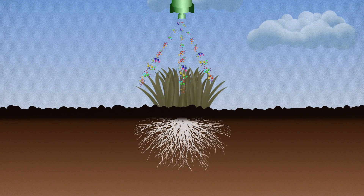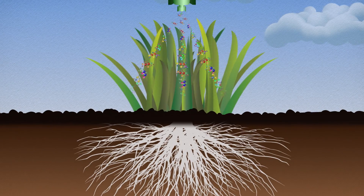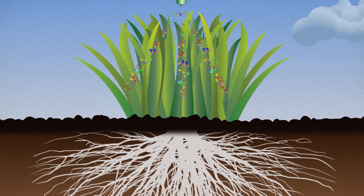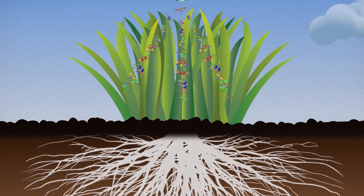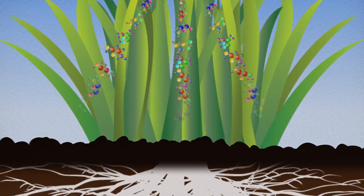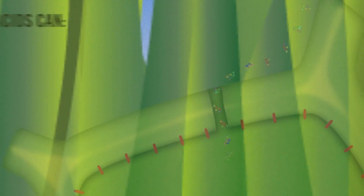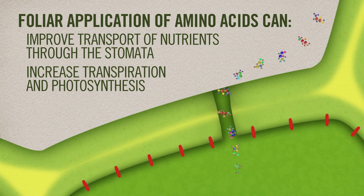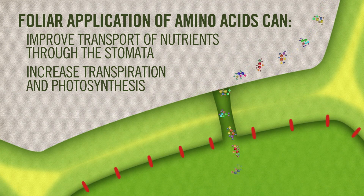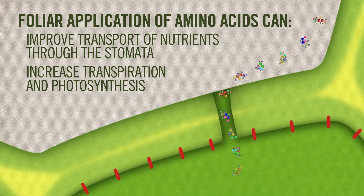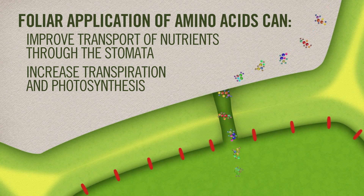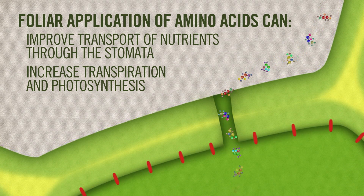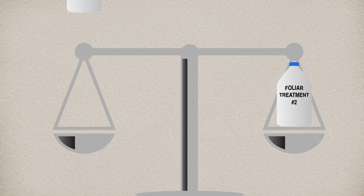Thankfully, plants are also able to use externally provided amino acids to supplement those they create on their own. Amino acids can be supplied through the soil, but the fastest route to absorption is through the leaves. In fact, the foliar application of amino acids can improve transport of nutrients through the stomata and increase transpiration and photosynthesis, even during periods of low light and moisture, or high temperatures and high concentrations of salt.